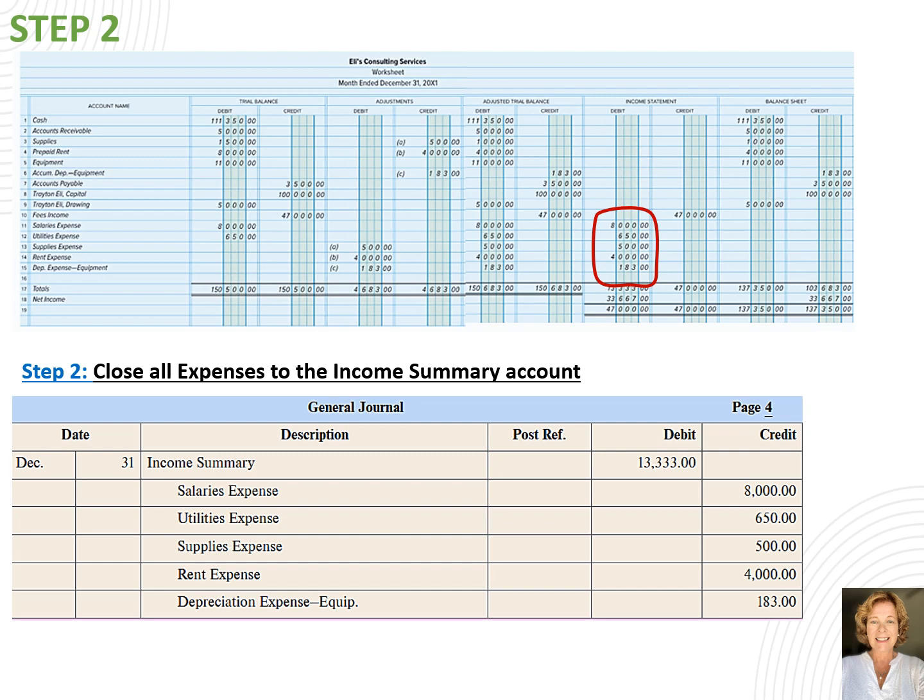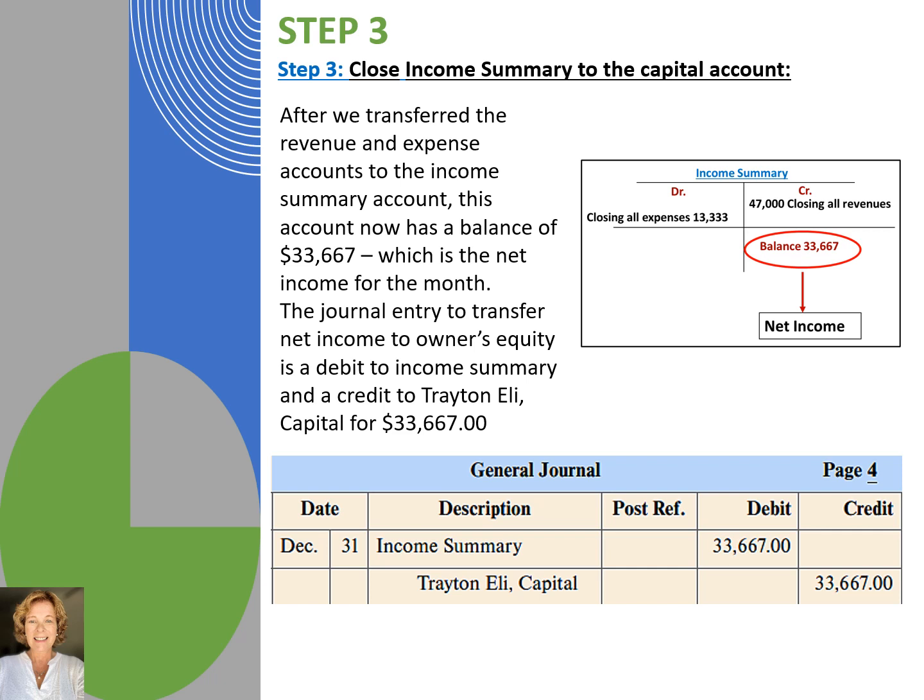We're now ready for step 3 of the closing process. Now that we cleared the income statement and moved all revenue and expense accounts to the income summary account, we need to determine the balance in that account. It's an additional check that the amount is our net income, and we can compare it to our worksheet to ensure that it is the same amount. In our case we have a balance of $33,667, which is the same amount that we had on our worksheet. We're now ready to transfer that amount to the owner's capital account.